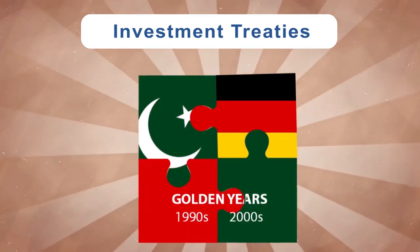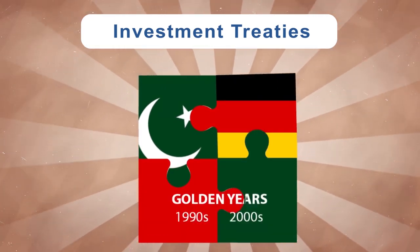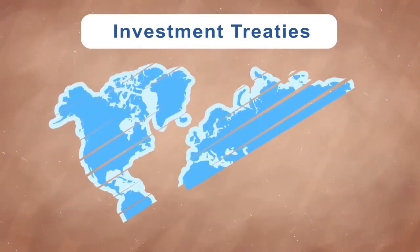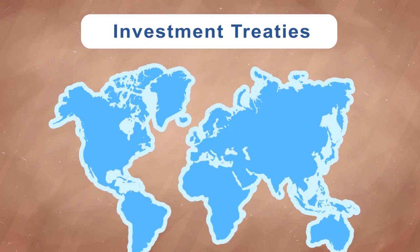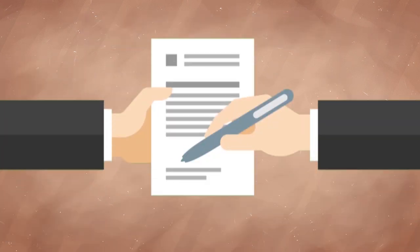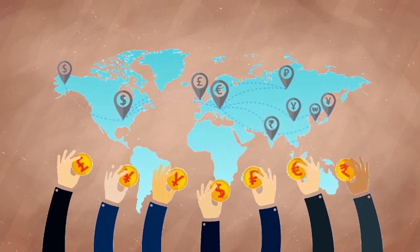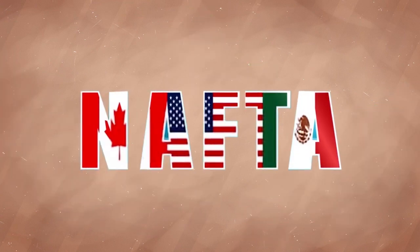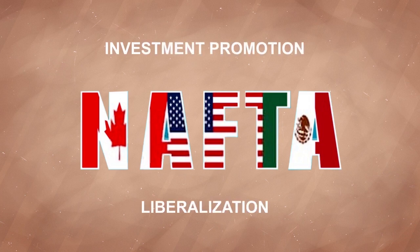The golden years of the BITs was from the 1990s to the 2000s, when about 160 BITs were concluded every year. The proliferation of BITs gained momentum during this era as developing countries incorporated BITs into their national economic development schemes for the promotion of foreign direct investment. Although the primary purpose of the BIT program was to provide foreign investment protection to the capital exporting developed countries, free trade agreements with investment chapters like the NAFTA were concluded to additionally achieve milestone objectives such as investment promotion and liberalization.